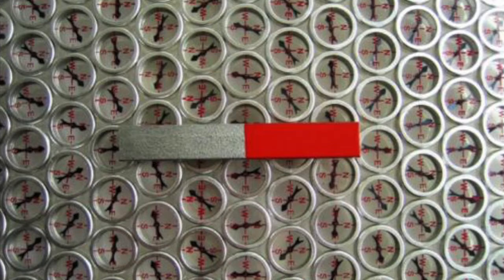Notice, the pointer end of those compasses will point away from the north end of the magnet. That means a compass actually points south.